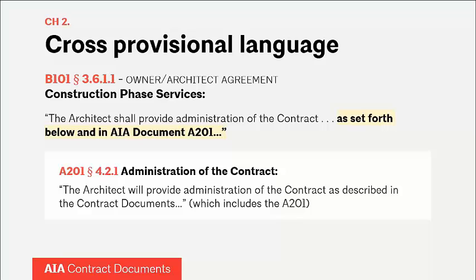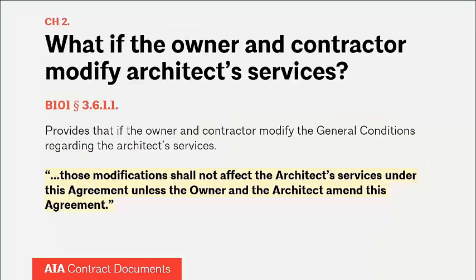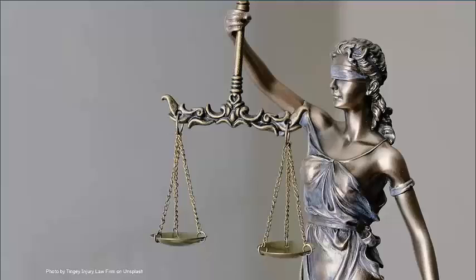But what happens if the owner and the contractor decide on their own to modify the architect's responsibilities in the A-201? According to the owner-architect agreement, no modification will affect the architect's services unless the owner also changes its agreement with the architect. This is also why, if the owner isn't using the A-201 as the project's general conditions, it's very important to read and reconcile the architect's services between the owner-architect agreement and the alternate construction conditions being used.